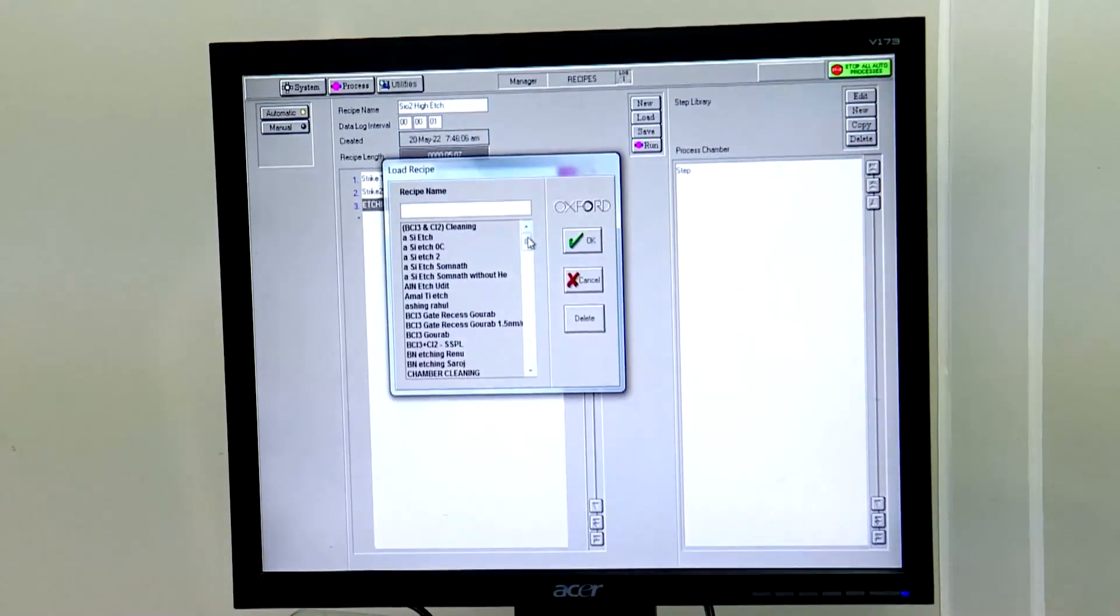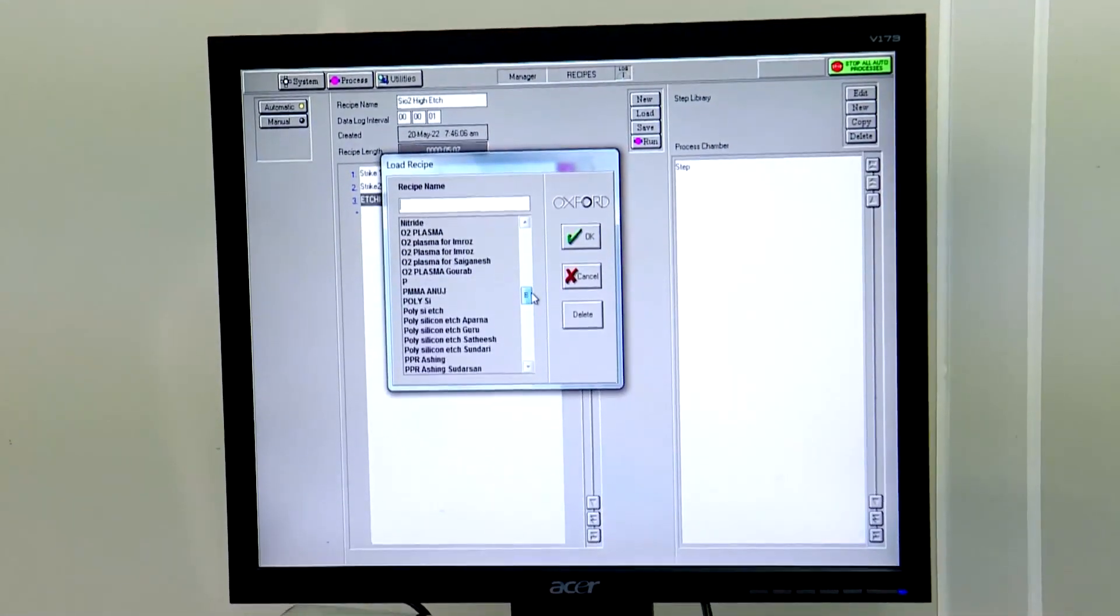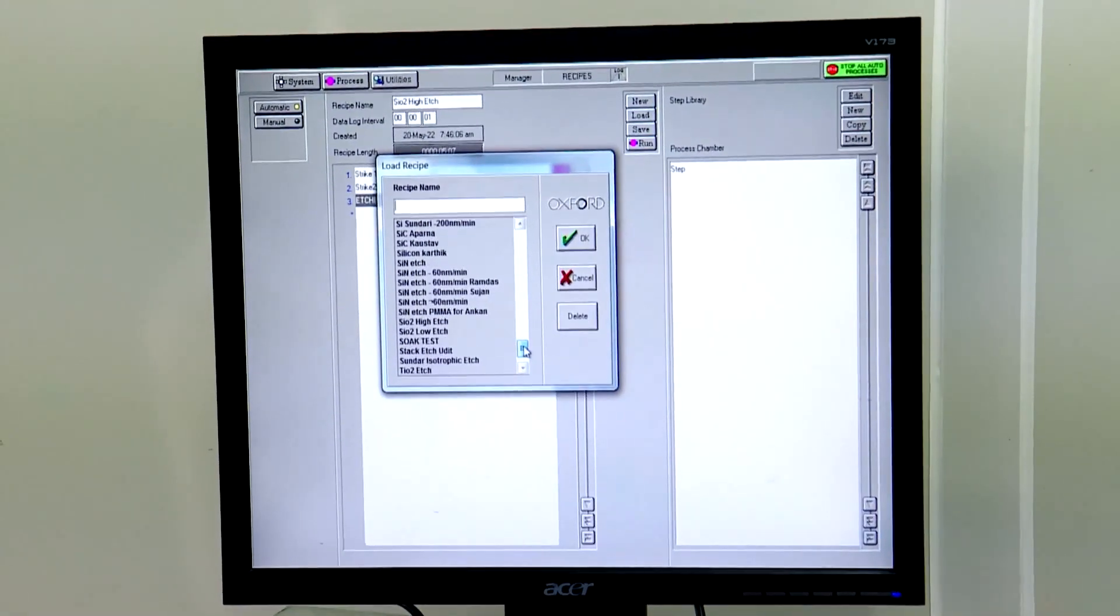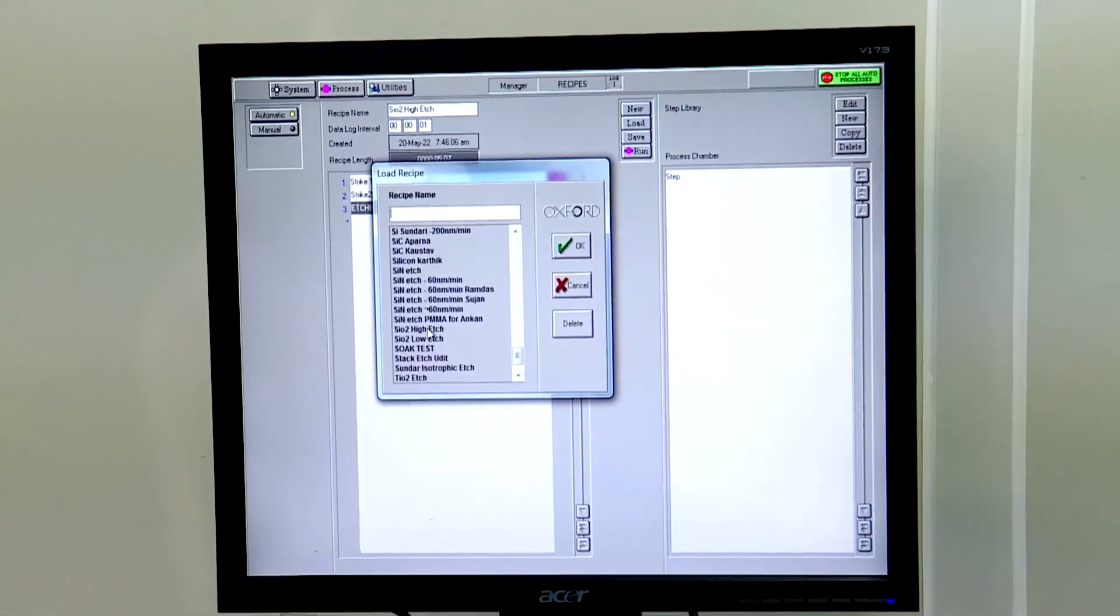To run the process, first, we need to load an optimized recipe for this particular oxide etching. Accordingly, we have to check the other process parameters.